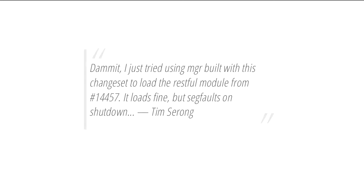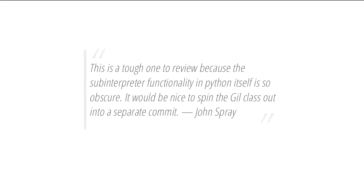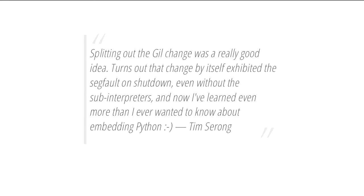I had a pull request open, then tested it again and got a segfault on shutdown. I'd put my GIL class, refactored ManagerPyModule, and sub-interpreter changes all in one commit. John rightly noted it was tough to review because sub-interpreter functionality in Python is so weird, and suggested splitting the GIL class out into a separate commit. That was a really good idea, because when I implemented just the GIL class and replaced PyGILState_Ensure and Release with my class without doing the sub-interpreter changes, I still got the segfault. The lesson: one commit per logical change.